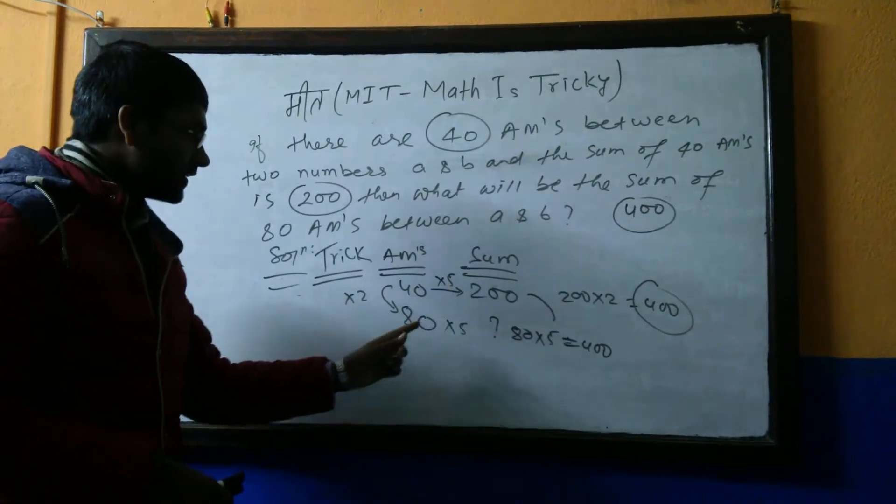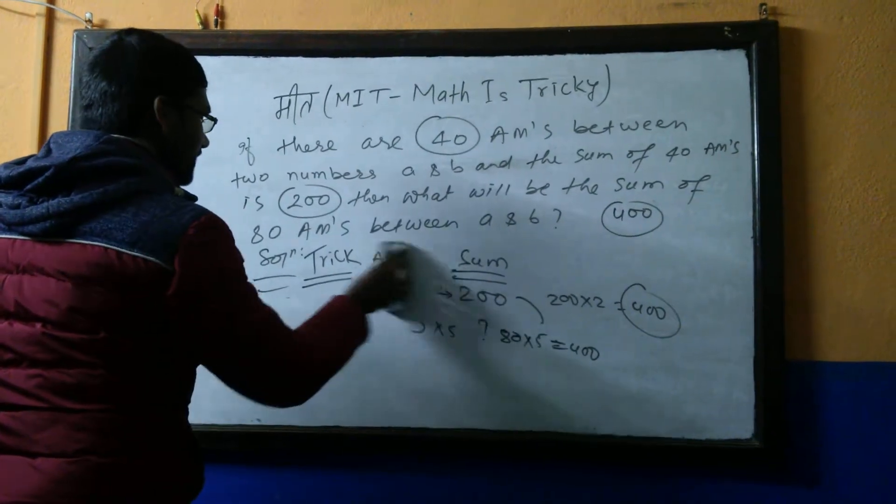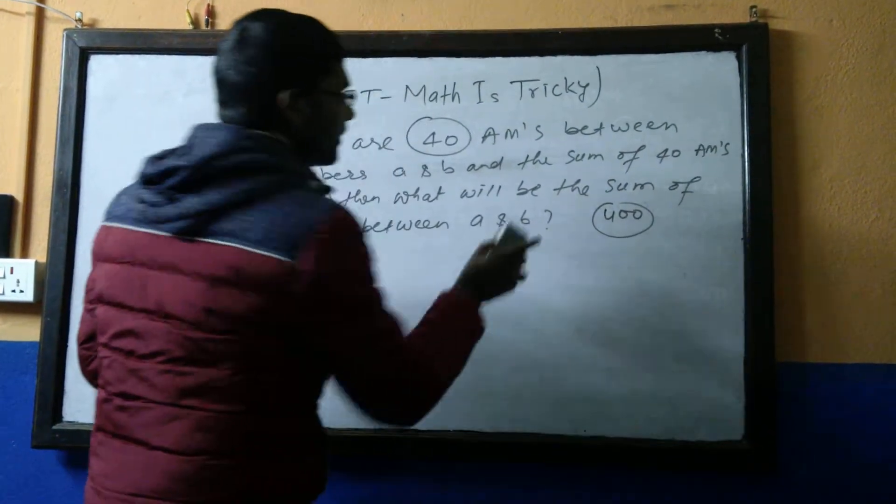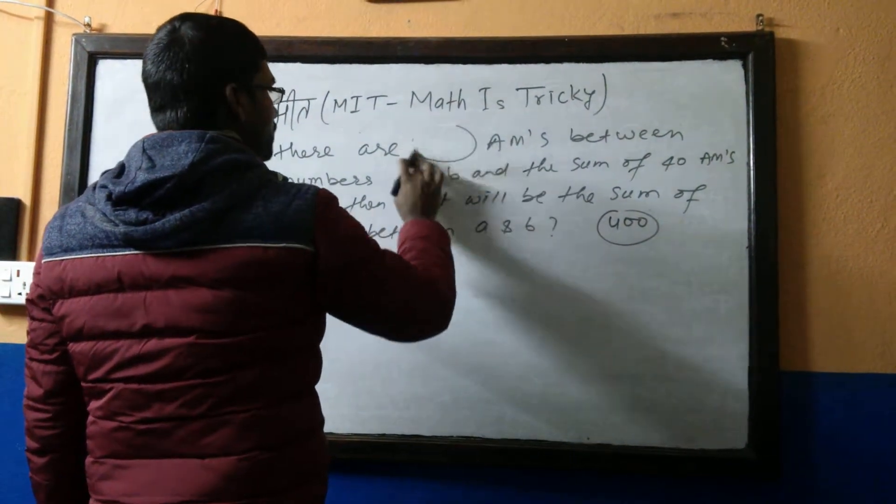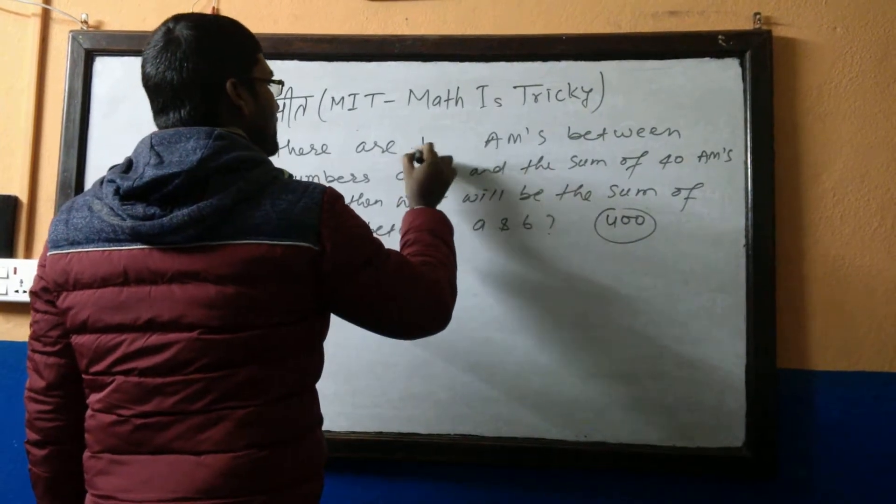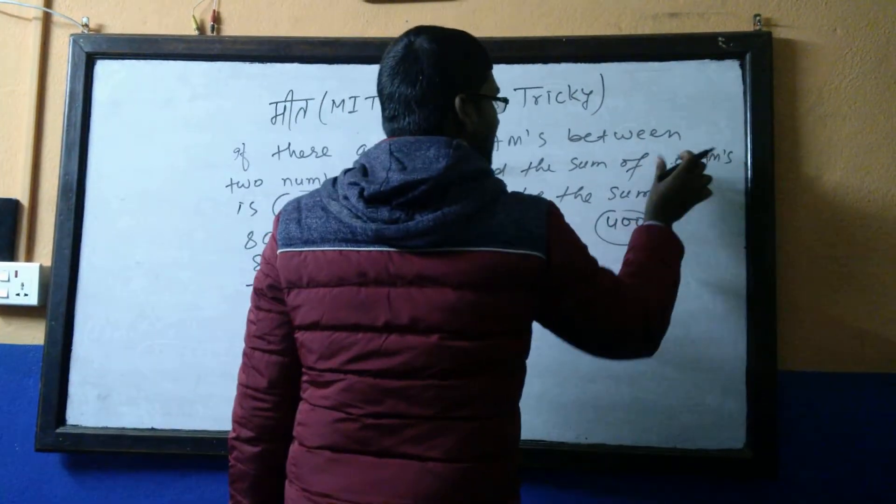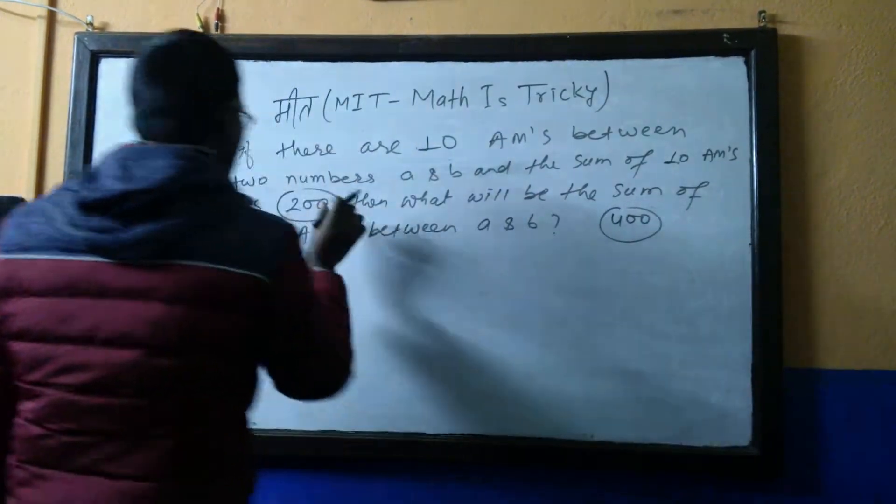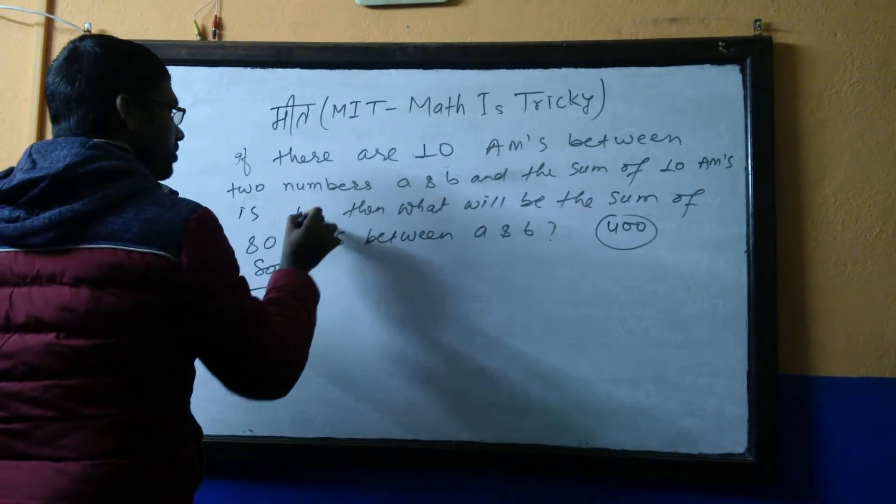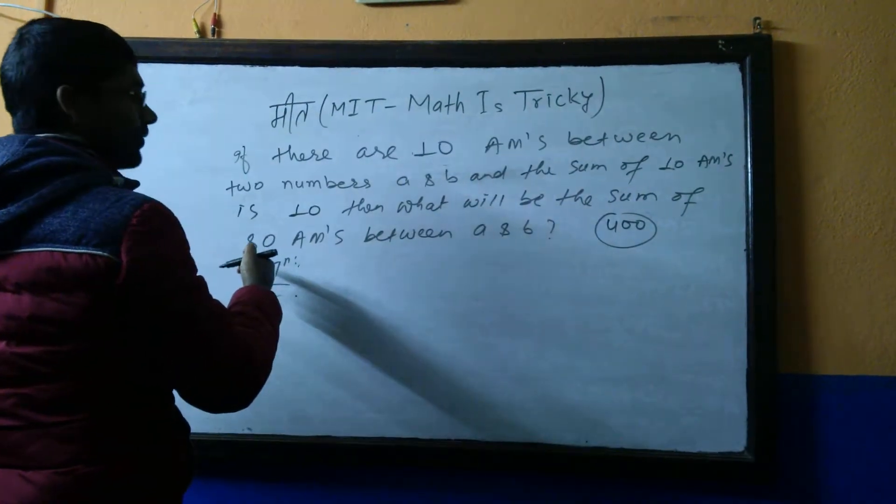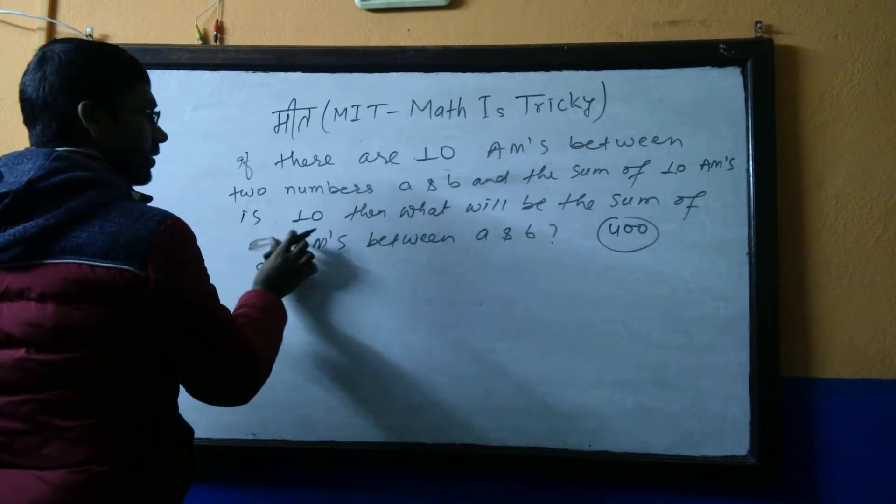You have to get the sum at second case. So 40 times 2 is 80, so 200 times 2 will be your answer. Now please use this trick and process to solve this problem. Suppose there are 10 AMs between two numbers and the sum of 10 AMs is 100. Find the sum of 60 AMs between the same numbers.